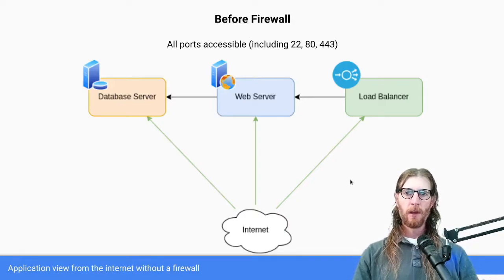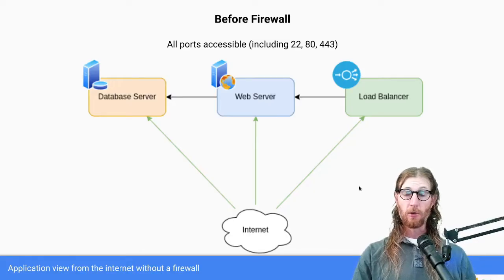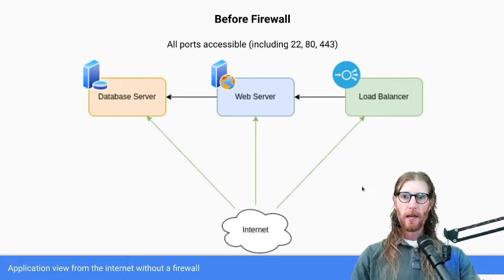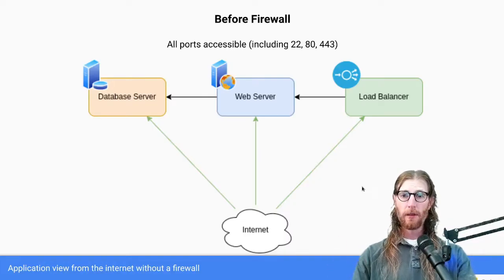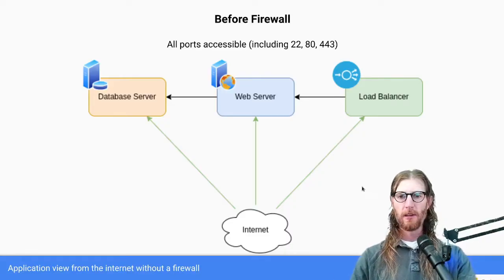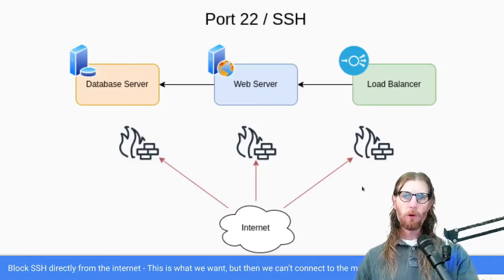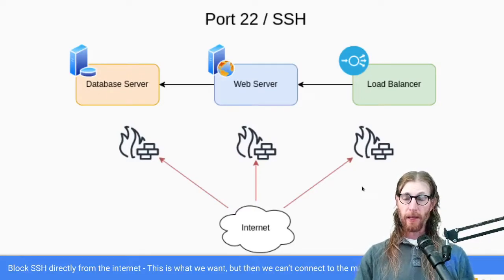Before we put a firewall in — we've just provisioned these fresh new VMs on our cloud provider and they don't do anything yet — there's currently no firewall in place so all ports are accessible. The big ones to think about are port 22 for SSH and ports 80 and 443 for HTTP. Everything is reachable, which is good at first because if it wasn't you'd have a hard time configuring these machines.